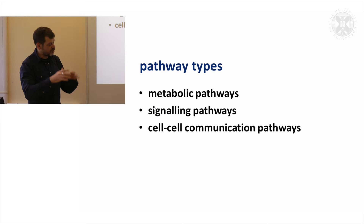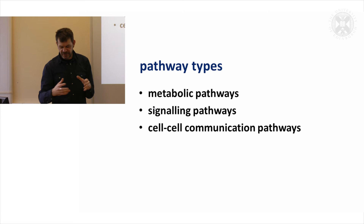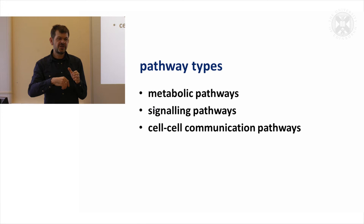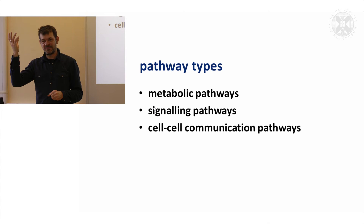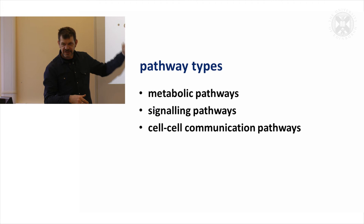We can start building these pictures up to the level of cell-to-cell communication — this happens to this cell, what happens to the next cell? We can use the methods we're going to look at today not only for biochemical reactions but for mapping reactions between different organ systems. We know this happens in the brain, this causes something to be released, and this acts on peripheral tissue.